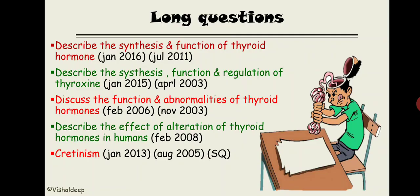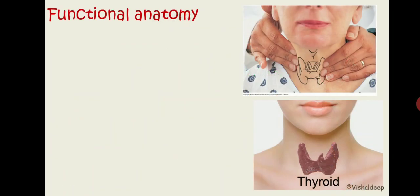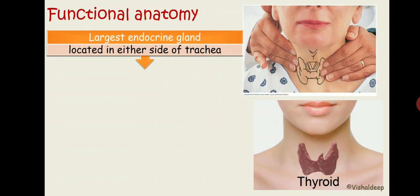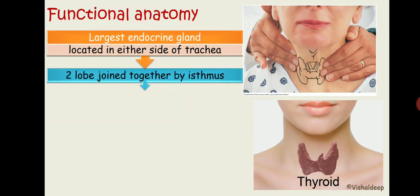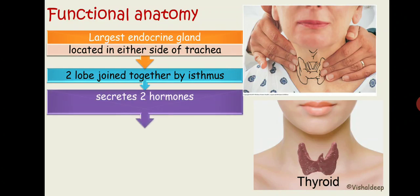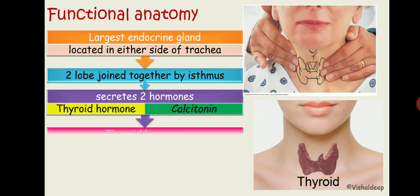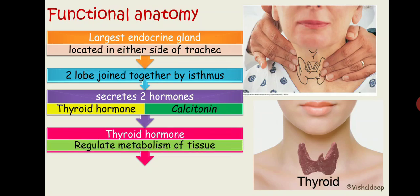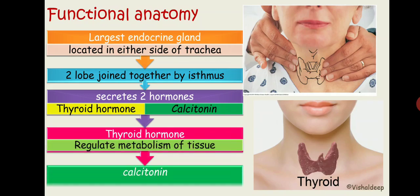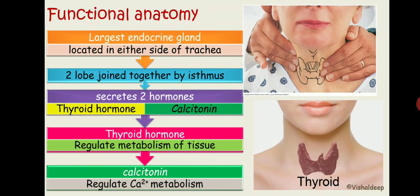Now let's discuss about the thyroid gland, starting with the functional anatomy. As you guys already know, the thyroid gland is the largest endocrine gland. It has two lobes located on either side of the trachea, and these two lobes are joined by the isthmus. The weight of the thyroid gland is basically 25 grams in adults, and it has the highest blood supply — 500 ml per 100 grams of tissue per minute. The thyroid gland secretes two hormones: the thyroid hormone, which regulates the metabolism of tissue, and calcitonin, which is responsible for regulation of calcium metabolism.